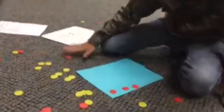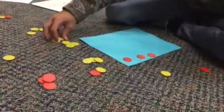We'll lay out our negative 3. And then we'll put out our 5 positives.